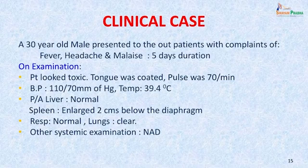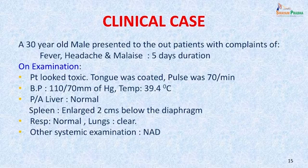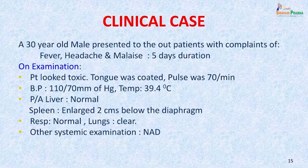Let us start with enteric fever, one of the most common causes of pyrexia of unknown origin, where the causative agent is the Salmonella group of organisms. A 30-year-old male presenting to outpatient with complaints of fever, headache, and malaise of 10 days duration. On examination he looked toxic, tongue was coated, pulse was 70 per minute, BP 110/70 mmHg, temperature 39.4 degrees centigrade — notably the pulse was not rapid despite fever. Spleen was enlarged 2 centimeters below the costal margin, smooth; respiratory system was normal; no other abnormalities detected.